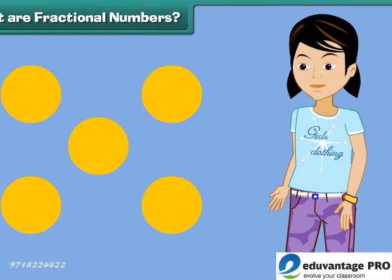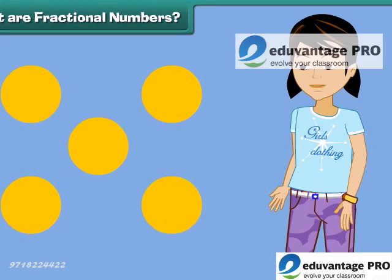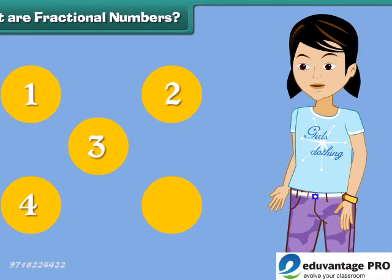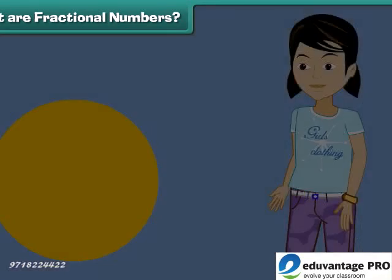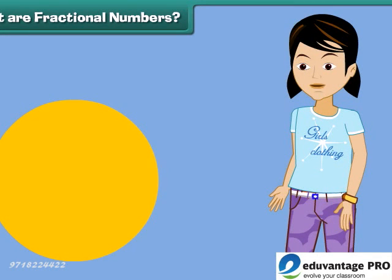Hey, can you count how many circles are here? 1, 2, 3, 4, 5. But what if there was just half part of a circle? How would we count it? Well, we will use fractions.